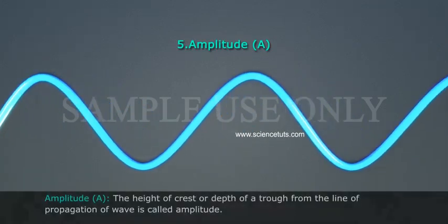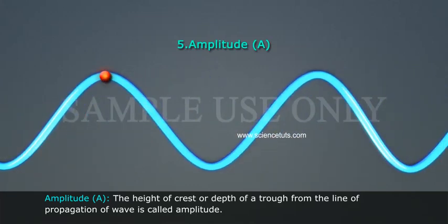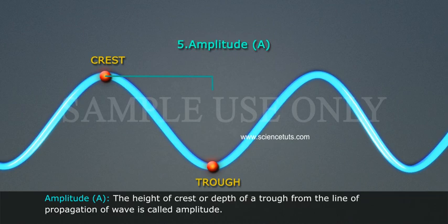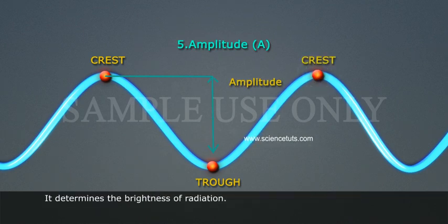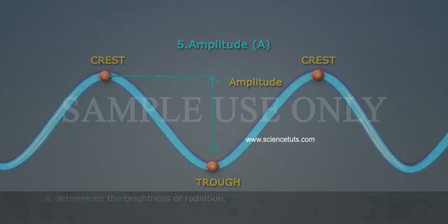Amplitude (A): The height of crest or depth of a trough from the line of propagation of wave is called amplitude. It determines the brightness of radiation.